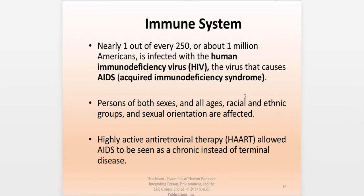Over the years, drugs have been developed — referred to here as highly active antiretroviral therapy — that have allowed AIDS to become a chronic condition rather than a terminal disease. It still presents many challenges and individuals must remain careful with their health and behavior, but it is no longer necessarily a death sentence. Originally, it was believed that AIDS was primarily associated with homosexuals. Initially four groups — all with H in their name — were considered highest risk: homosexuals, heroin addicts, hemophiliacs, and Haitians.